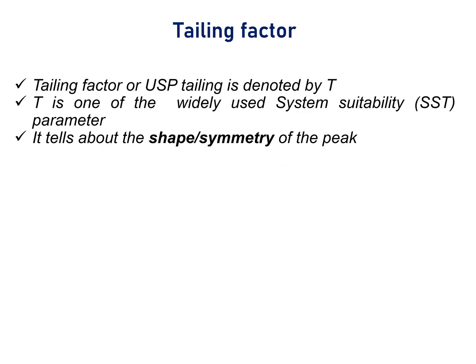Tailing factor, or USP tailing, is denoted by T. Tailing factor is one of the widely used system suitability parameters used in chromatographic analysis.